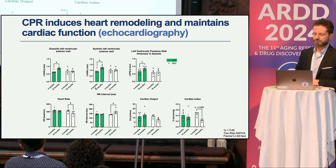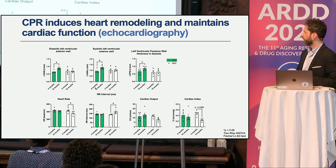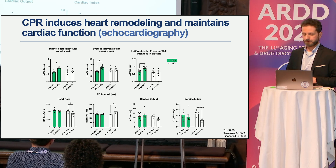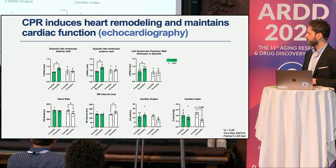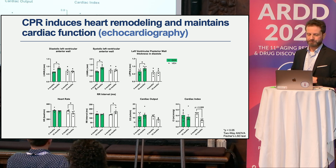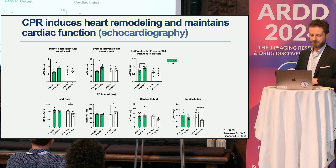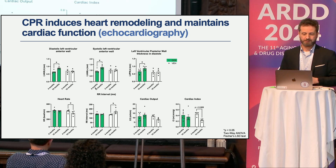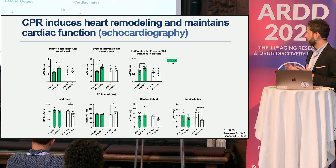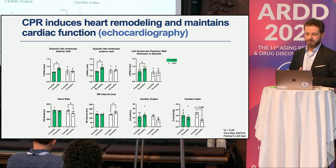Heart function was particularly interesting because cardiomyocytes are terminally differentiated. The first three graphs show left ventricular wall measures, all of which increase in our reprogrammed mice, indicative of heart remodeling—which could be hypertrophy or hyper-function. To distinguish between them, we correlated with other measures. Heart rate drops in vehicle controls but is maintained in reprogrammed mice. The RR interval is simply the inverse of heart rate, confirming the same finding. Cardiac output shows a trend of increase in reprogrammed mice while vehicle controls drop. Cardiac index—cardiac output corrected for weight—also trends toward maintenance in reprogrammed mice versus a decline in controls.